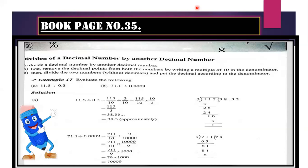Kindly check example number B. I have 0.0009. In place of decimal, I put 1. I count the digits: 1, 2, 3, 4. So in my denominator I put 4 zeros — 10000. The number of decimal digits equals the number of zeros in the denominator. The first term remains as it is. The sign of division is converted into multiplication and we flip the term. After cancellation and rough division, the answer is 79 multiplied by 1000.